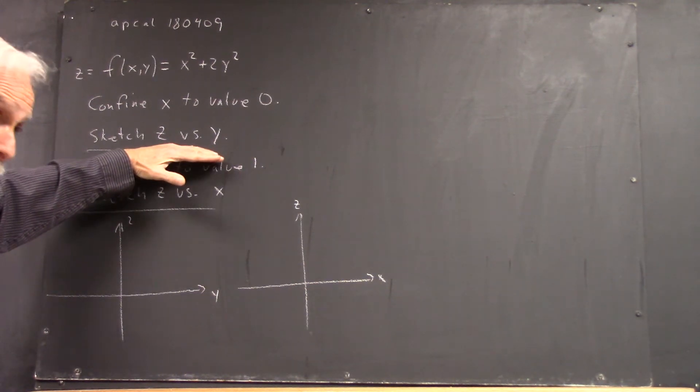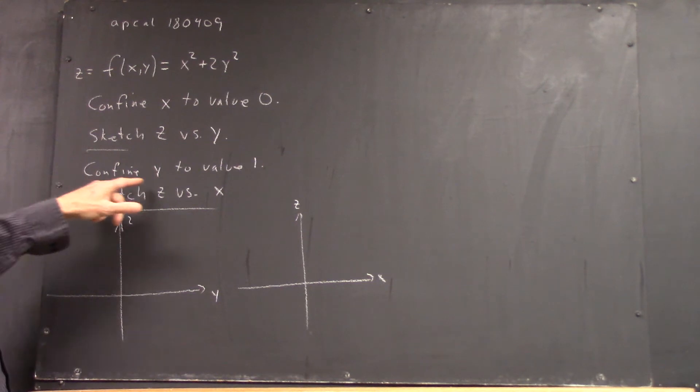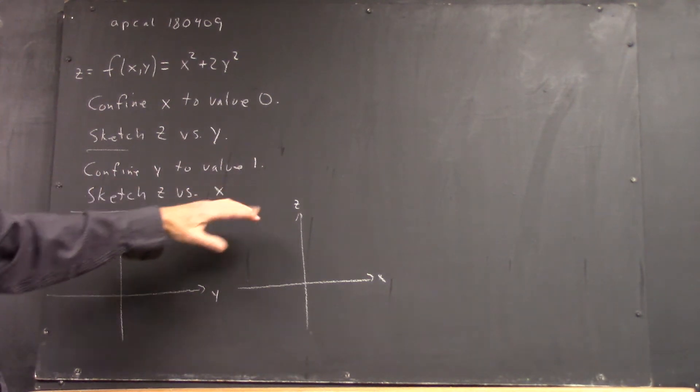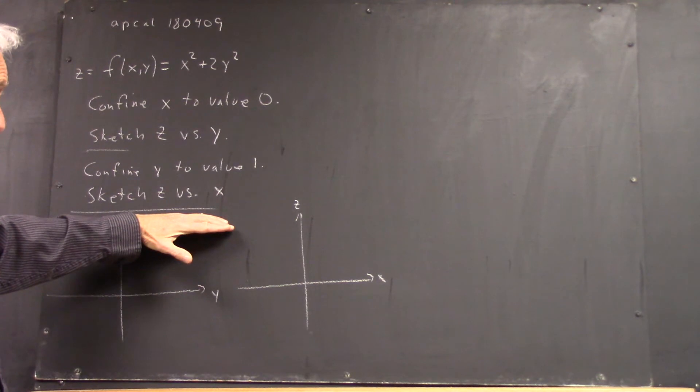Okay, after we do that, then we're going to confine Y to the value 1 and sketch Z versus X and see what we get.